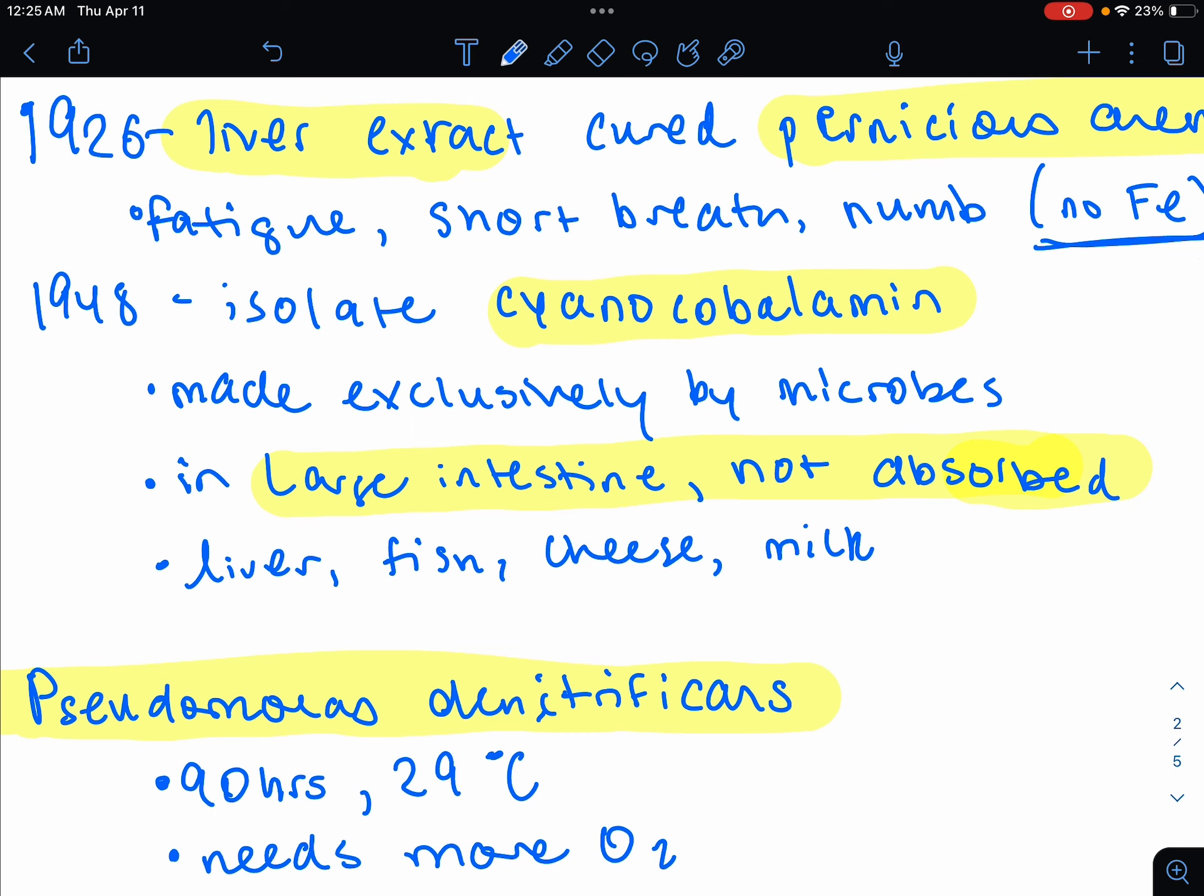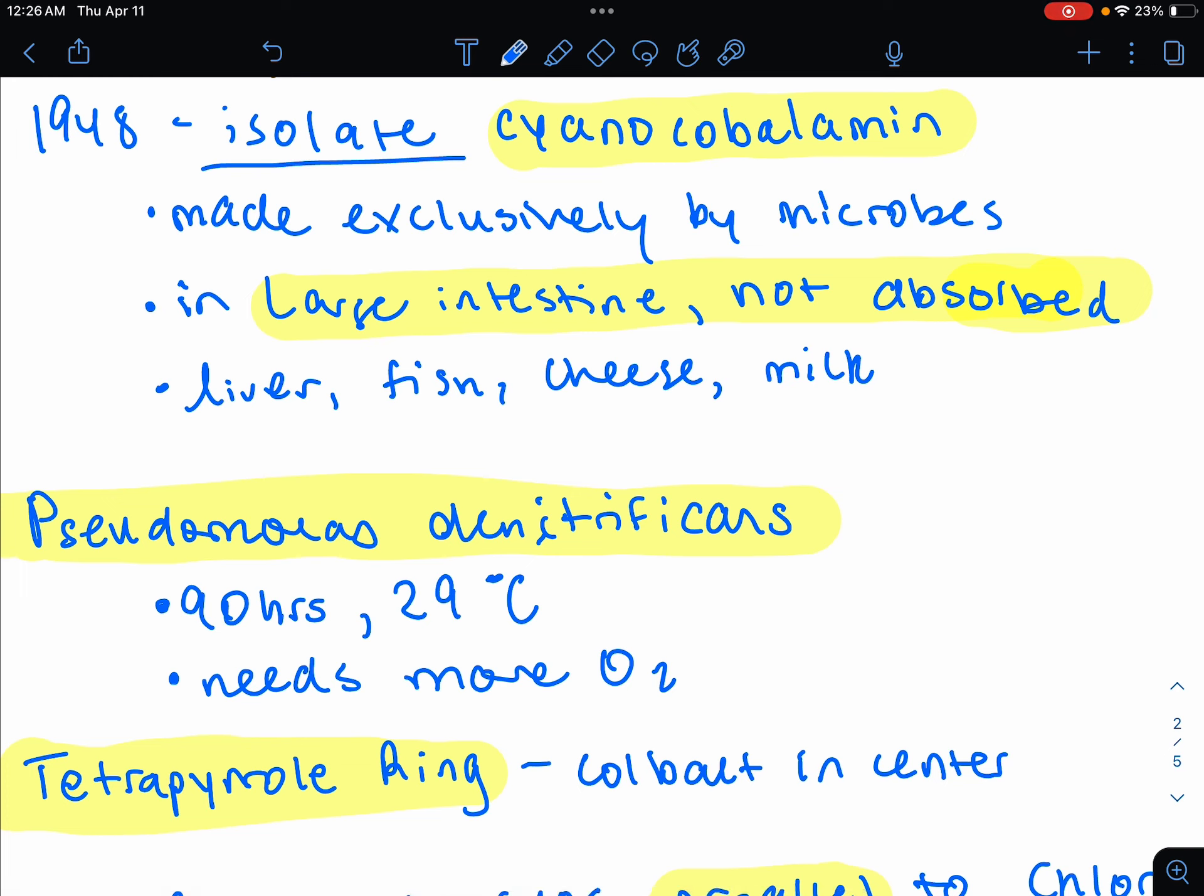In 1948, you have vitamin B12, which is also known as cyanocobalamin. And this is going to be isolated. This is when they isolated, 1948, from liver extracts.